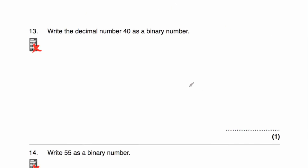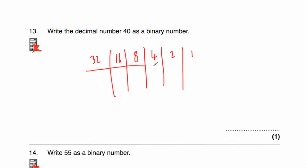Question 13 asks us to write the decimal number 40 as a binary number. Starting off with columns: 1, 2, 4, 8, 16, 32. We won't go up to 64 because that would be too big. To get 40: we use 32. If we had 16, then 32 plus 16 would be 48 — too big. If we had an 8, well 32 plus 8 is 40. So the binary number is 101000.